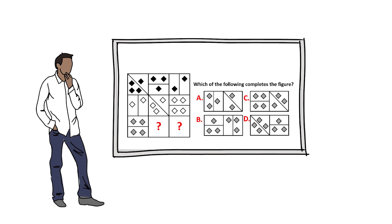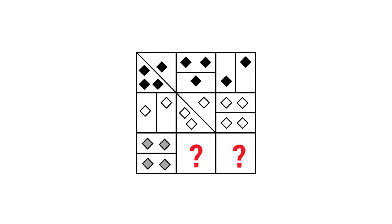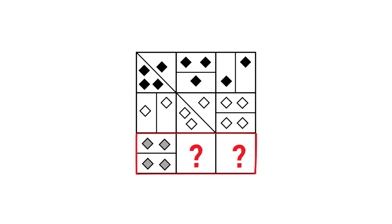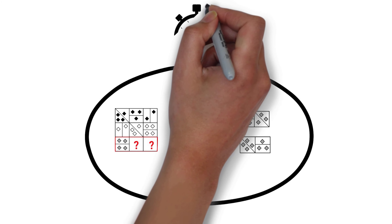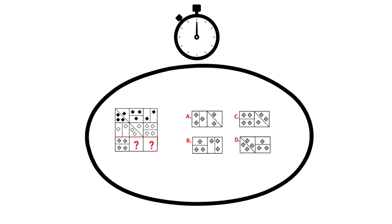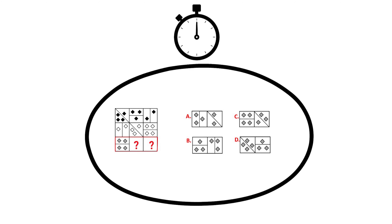The answer to this next question may seem confusing at first, but it is very simple. You're presented with a 3 by 3 matrix where two of the shapes are missing, located in the bottom row. You have four possible choices: A, B, C, and D. Take a close look — the solution is not obvious, but it is simple. Give yourself 10 to 30 seconds, pausing the video if needed, to see if you can come up with the answer on your own.